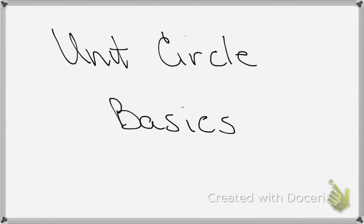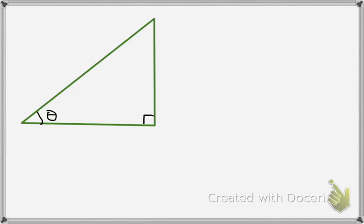In this video, we want to look at the unit circle and some of the basics surrounding that — finding sines and cosines of angles. Let's consider first a review of right triangle trigonometry. We have a right triangle here with an angle theta, a side that is opposite angle theta, the hypotenuse of the right triangle, and the adjacent side.